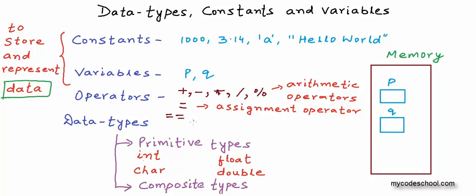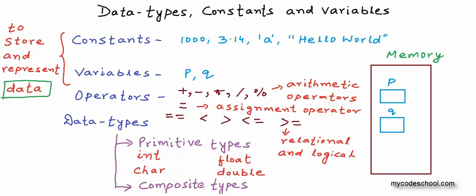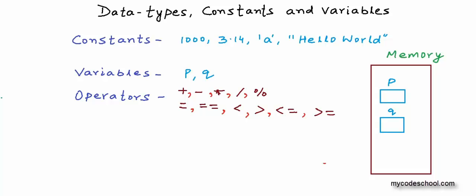We also have operators that we call relational and logical operators. Two equal-to signs is the equality operator — if you want to compare two values for equality, you use two equal-to signs. Then we have operators like less than, greater than, less than or equal to, and greater than or equal to. Constants, variables, and operators are combined together to create mathematical and logical expressions that evaluate to something. For example, if p and q are variables of type integer, then p plus q evaluates to the sum of values stored in p and q, and p plus 2 evaluates to the value stored in p plus 2, where 2 is a constant of type integer.